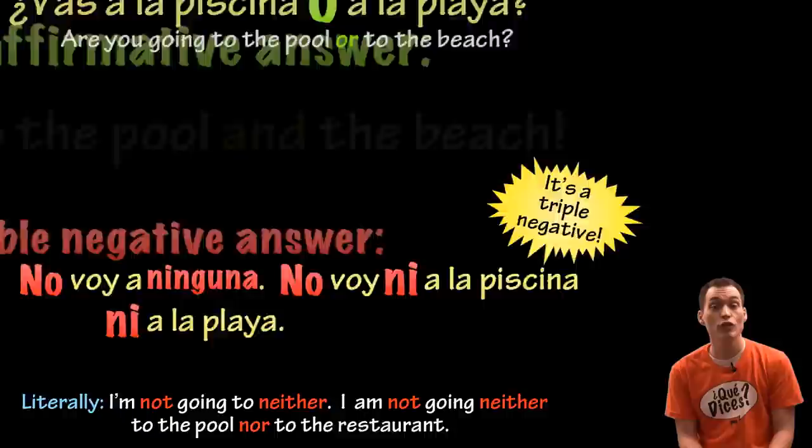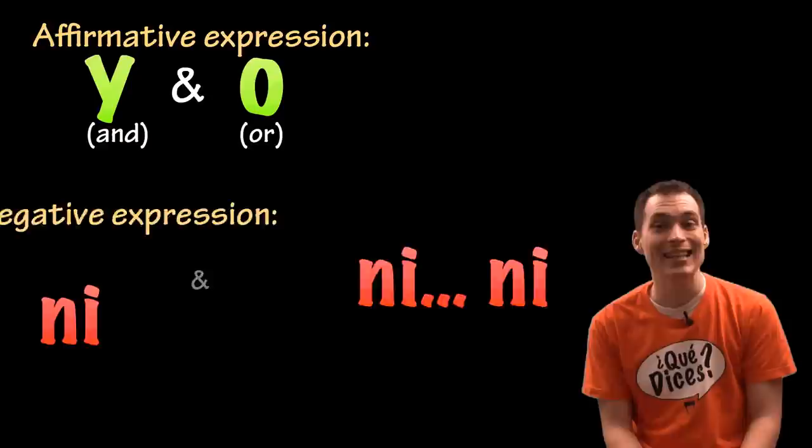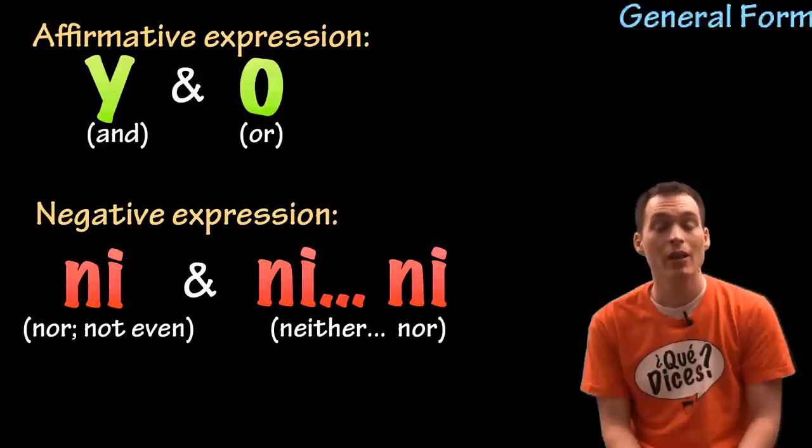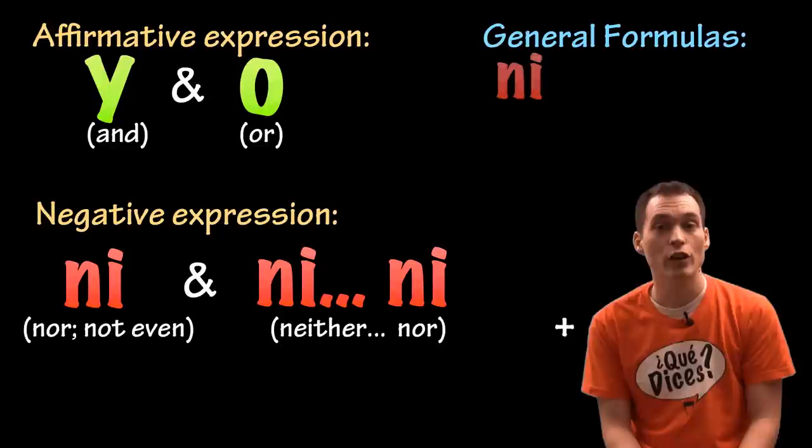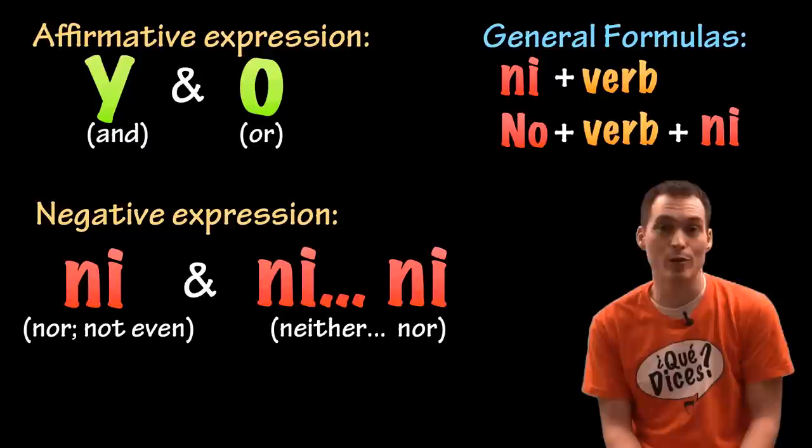So in short, o means 'or,' y means 'and,' and ni means 'nor' or 'not even,' while ni...ni would be like 'neither...nor.' The basic formula for using ni or ni...ni is that if it goes before the verb, it makes the sentence negative. But if it goes after the verb, we still need a no before the verb, because in Spanish we like to use double negatives, triple negatives — however many negatives we can in a sentence.